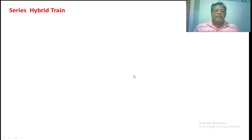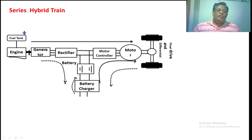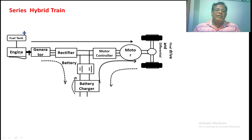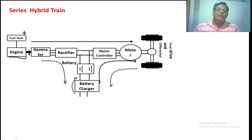First we are taking the series hybrid vehicle. In a series hybrid, two sources are giving power to the traction motor, which gives propulsion power to the front two wheels. One source is the IC engine, which is a unidirectional source — it can give mechanical output but cannot receive electrical power. The battery, on the other hand, gives electrical output and can also receive electrical power, making it a bidirectional source.